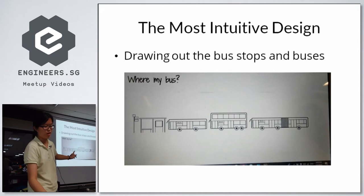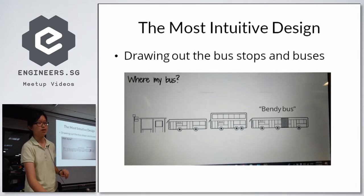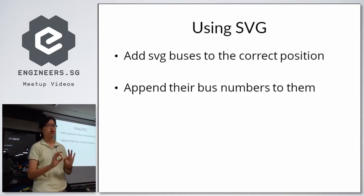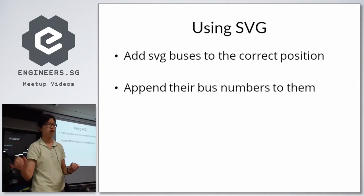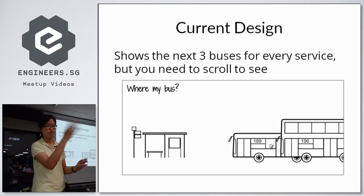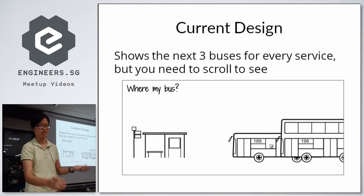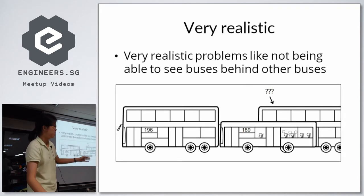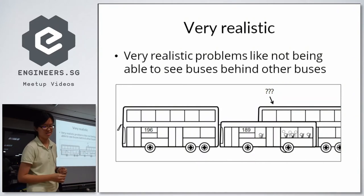This was my drawing — you can see the bus stop and the three different kinds of buses. Fun fact: one is called a bendy bus, as it's written in the LTA API. All those buses were drawn in SVG, and I would look through the data and add the SVG buses to the correct position. Afterwards, I'd look through every single bus and add the bus numbers to them. This is how it looks now — it shows the next three buses for every service, and as you scroll it shows every single bus the data gives you. And it has very realistic problems — you can't see the bus behind another bus, just like in real life.